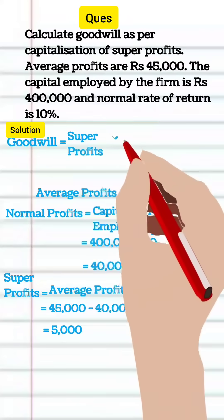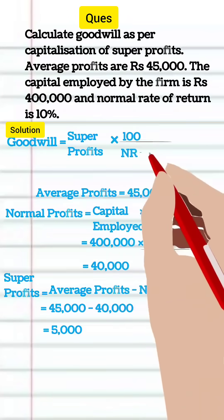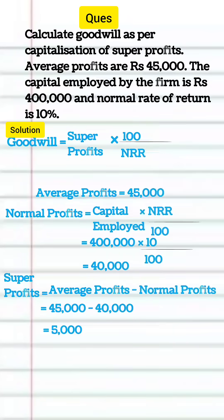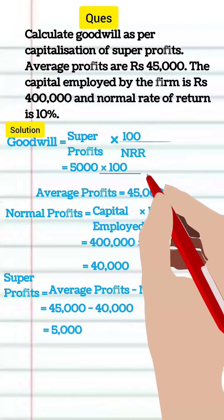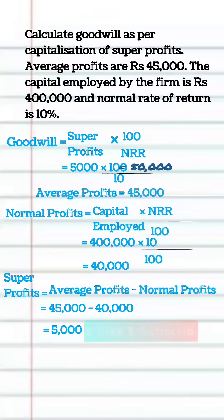Goodwill is equal to super profit multiplied by 100 divided by normal rate of return. So 5,000 multiplied by 100 divided by 10 — goodwill will be 50,000.